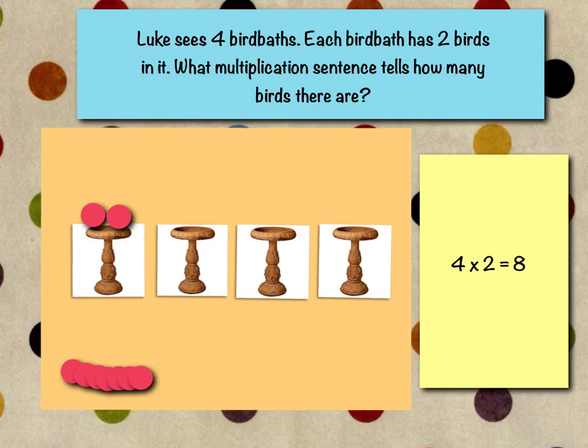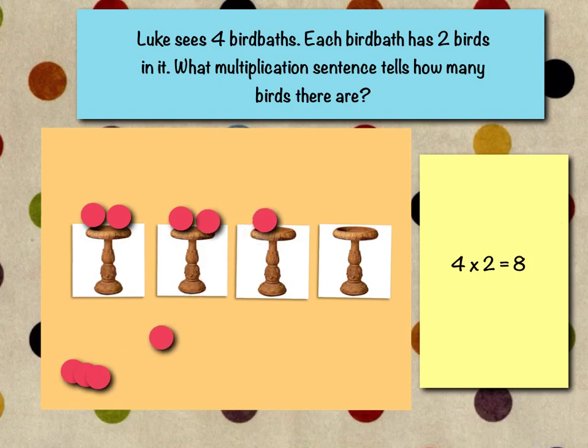So let's put birds in our bird bath for our picture. We have two in the first one. How many bird baths? Four bird baths — one, two, three, four. And then two birds in each bath: one, two, three, four birds, five, six birds, and seven, eight birds.